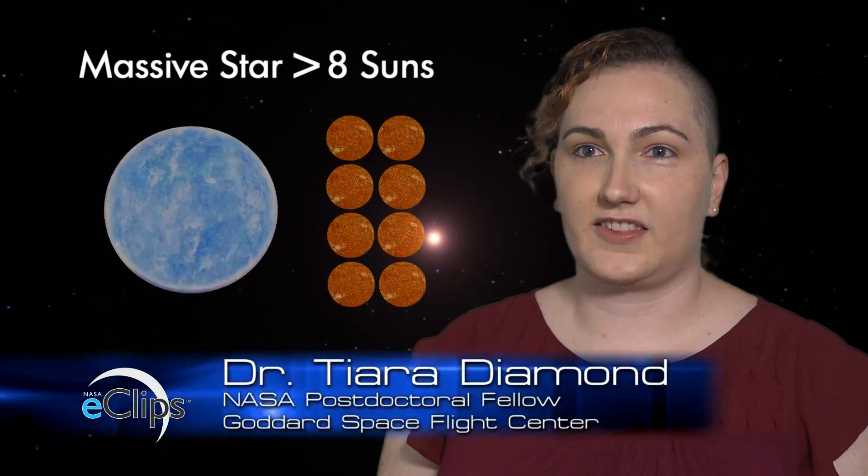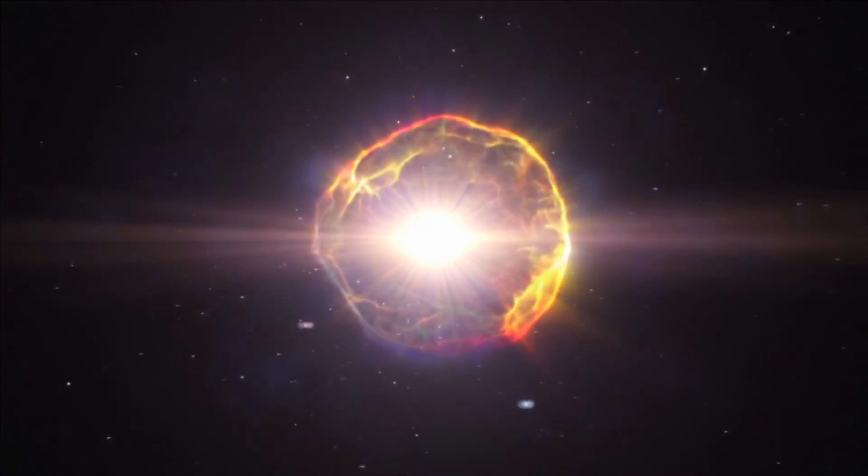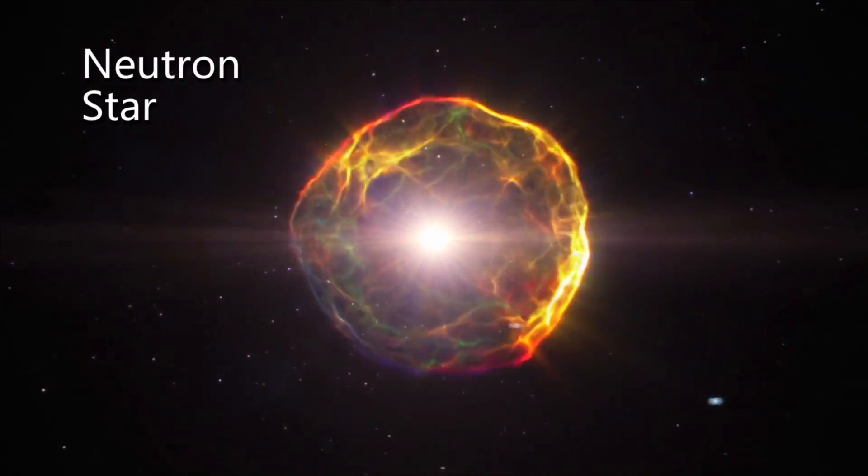So, at the end of a massive star's life, we have what's called a core collapse supernova. So, the core region collapses in on itself and the outer region in falls and then rebounds. And you get left with a neutron star or a black hole.